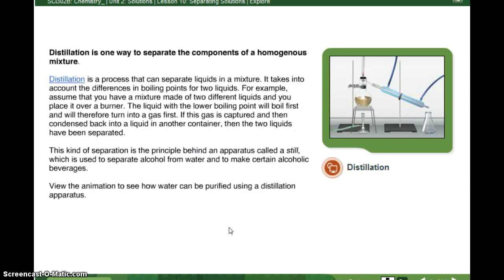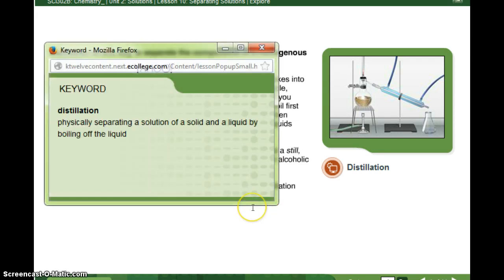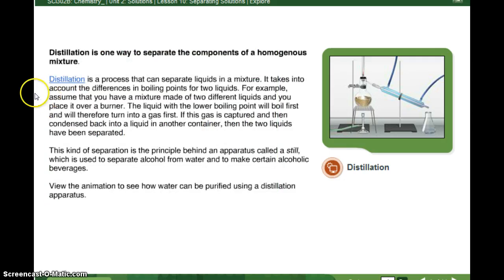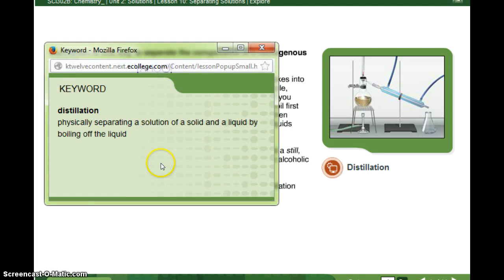Distillation is one way to separate the components of a homogenous mixture. So, distillation, physically separating a solution of a solid and a liquid by boiling off the liquid. Distillation is a process that can separate liquids in a mixture. It takes into account the differences in boiling points for two liquids. Okay, so I kind of want to pause here, because the definition that they used is, okay, if you have salt dissolved into water, if you boil all the water away, what's left over? The salt is left over in your pan.